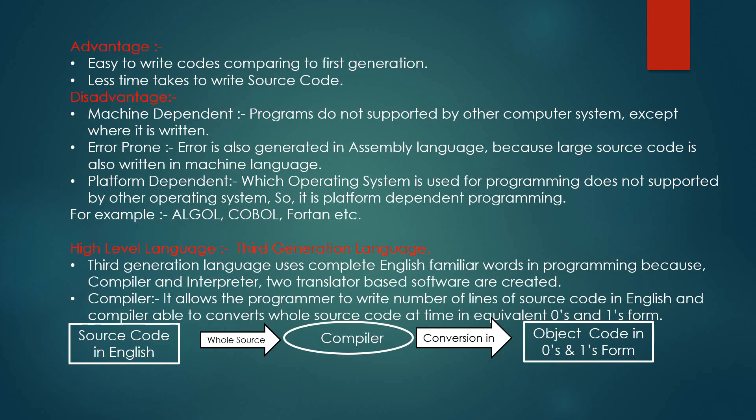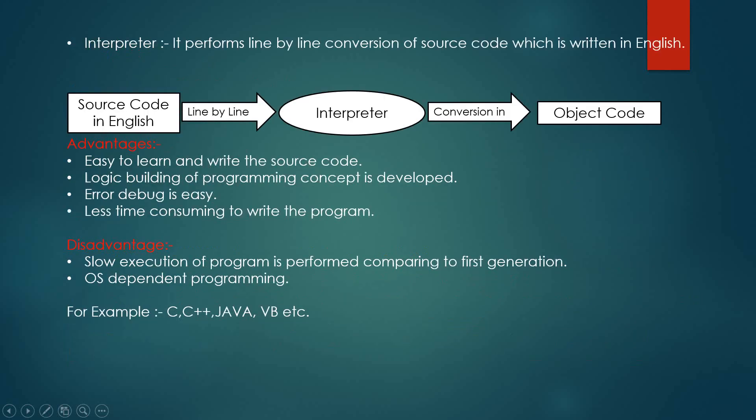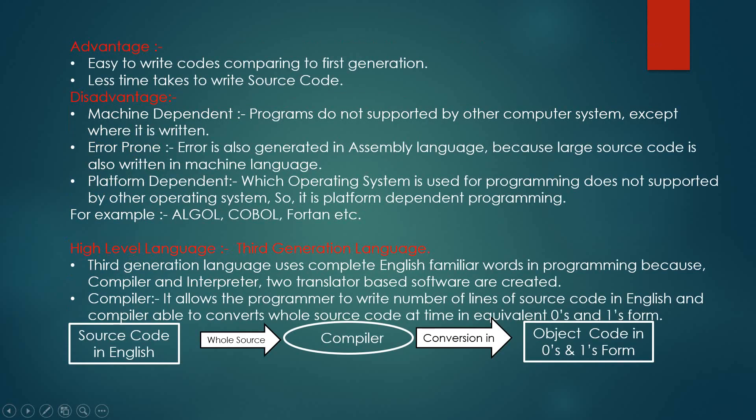Examples of second-generation programming languages include ALGOL, COBOL, FORTRAN, etc. Now we come to the third generation, that is the high-level language. This is a very revolutionary change in computer language because you can fully use English familiar words in programming. You can completely use English terms to build the programming source code, making it a revolutionary change in the third generation. This is made possible by two translator-based software programs: the compiler and the interpreter.